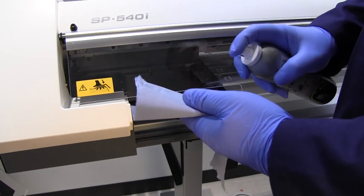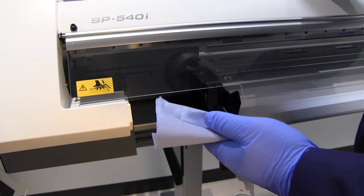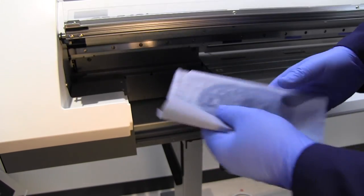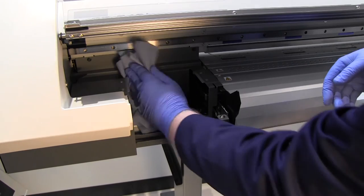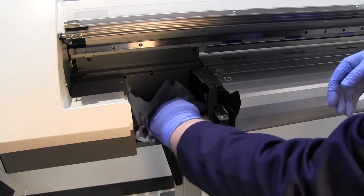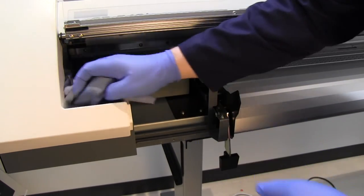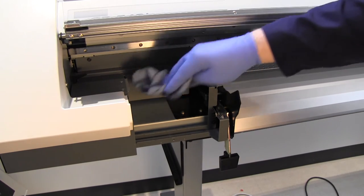Be sure to clean the maintenance compartment once the printhead is returned to the right-hand side of the machine. This would normally involve wiping the surfaces to get rid of any built-up dust or fluff.